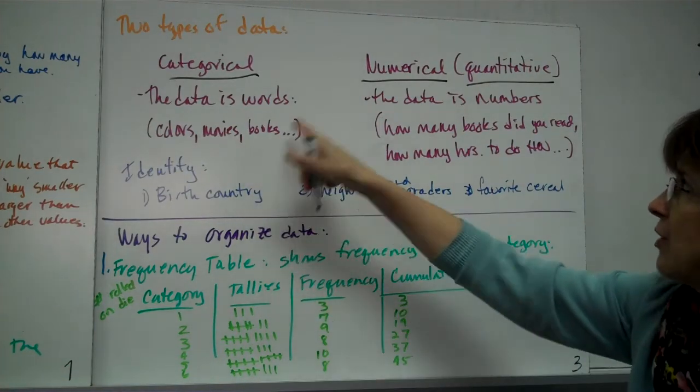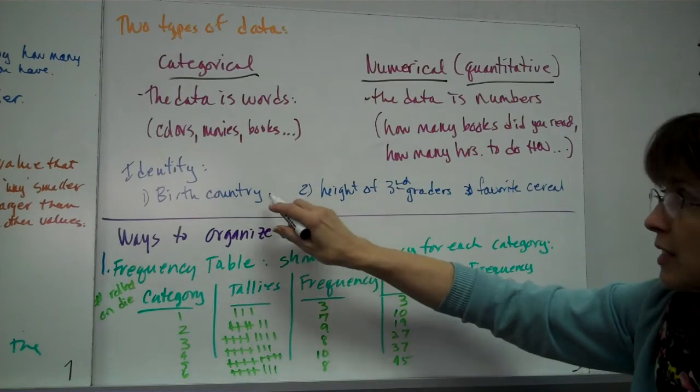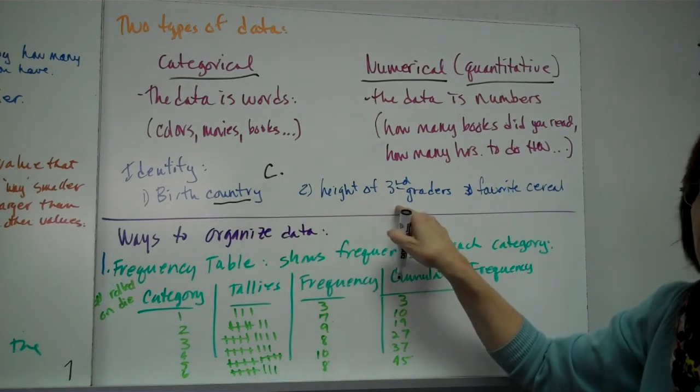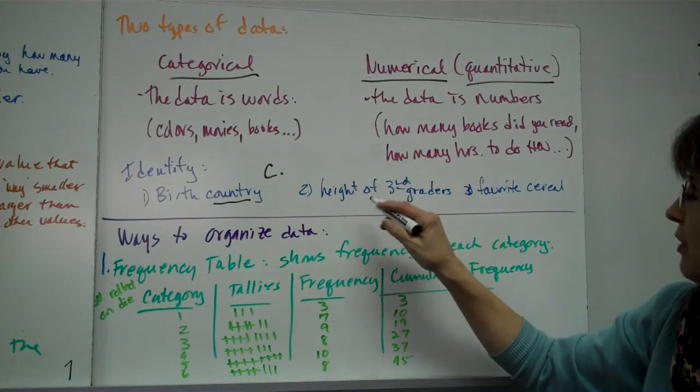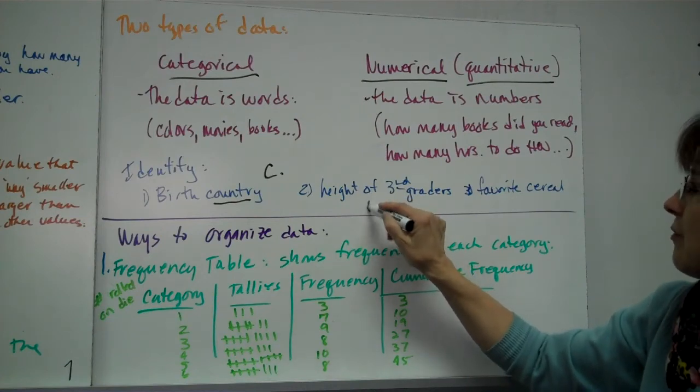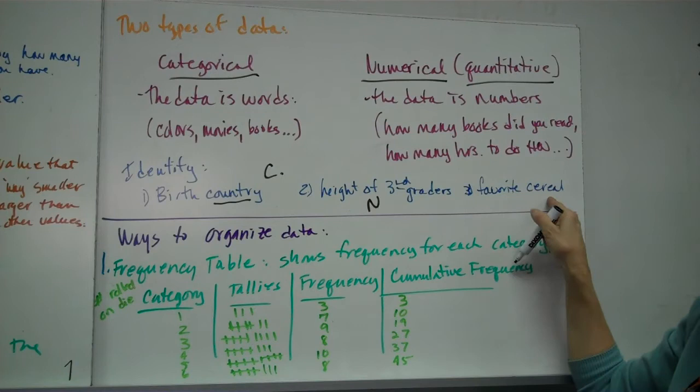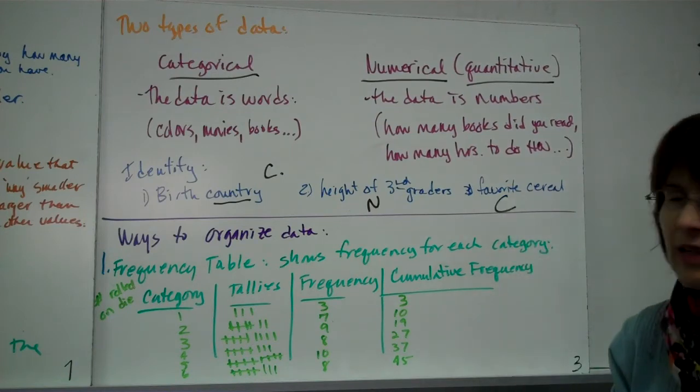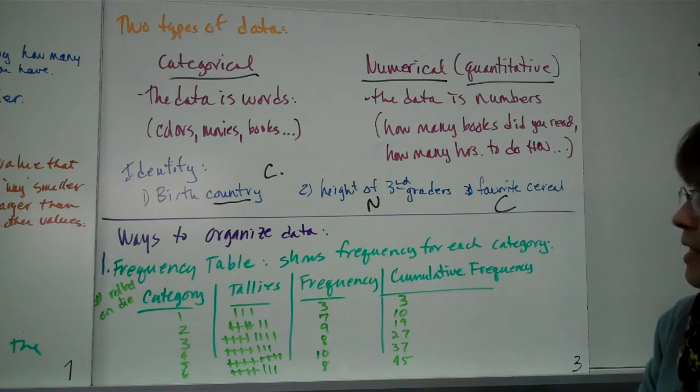So let's do a couple examples here. Birth country, would that be categorical and numerical? Of course, a country is not a number, so that would be categorical. The height of third graders, that's a number. They're three feet, five feet, whatever. Hopefully not five feet. That's a numerical. Your favorite serial, again, is not a number, hopefully. It's going to be categorical. Okay? So we'll do some more examples in class.